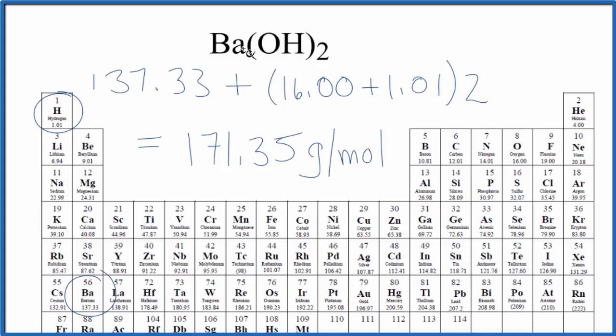That means if we have one mole of barium hydroxide it's gonna have a mass of 171.35 grams. Note that my periodic table rounds to two decimal places. If your periodic table rounds more or less you might have a slightly different answer.